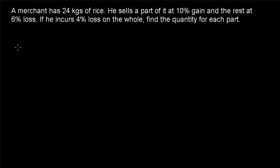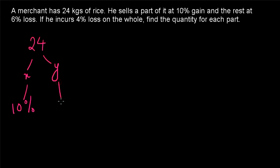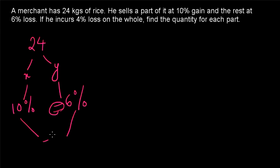Example 2: A merchant has 24 kilograms of rice. He sells a part of it at 10% gain and the rest at 6% loss. If he incurs 4% loss on the whole, find the quantity for each part. This is a similar kind of question. 24 kilograms is divided into X and Y. X is sold at 10% gain and Y is sold at 6% loss, which we write as −6%. Since it is a loss, we represent it with a negative sign, and the profit with a positive sign. Overall, he is getting a loss of 4%, represented as −4%. We can find X and Y using the rule of allegation.